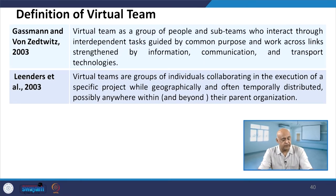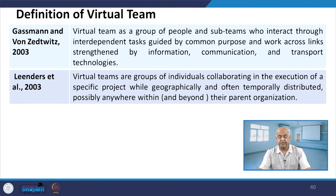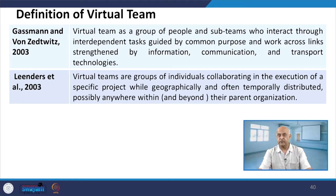Gassman and colleagues in 2003 defined a virtual team as a group of people and sub-teams who interact on interdependent tasks guided by a common purpose, and work across links strengthened by information, communication, and transport technologies. This team works by interacting through interdependent tasks, sharing information and communication mechanisms.